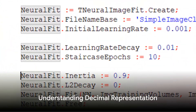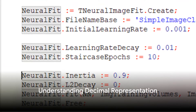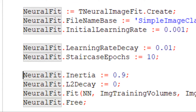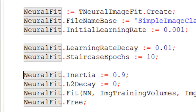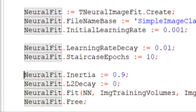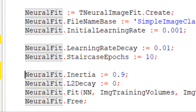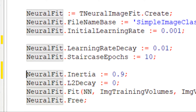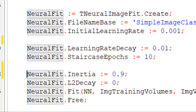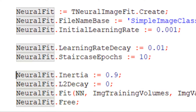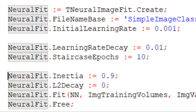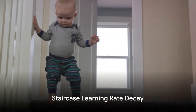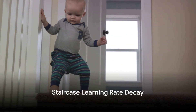In the world of neural networks, the learning rate decay is typically represented as a decimal value less than 1. For instance, a learning rate decay of 0.01 means that the learning rate decreases by 1% after each epoch. An epoch here is a complete pass through the entire training dataset.